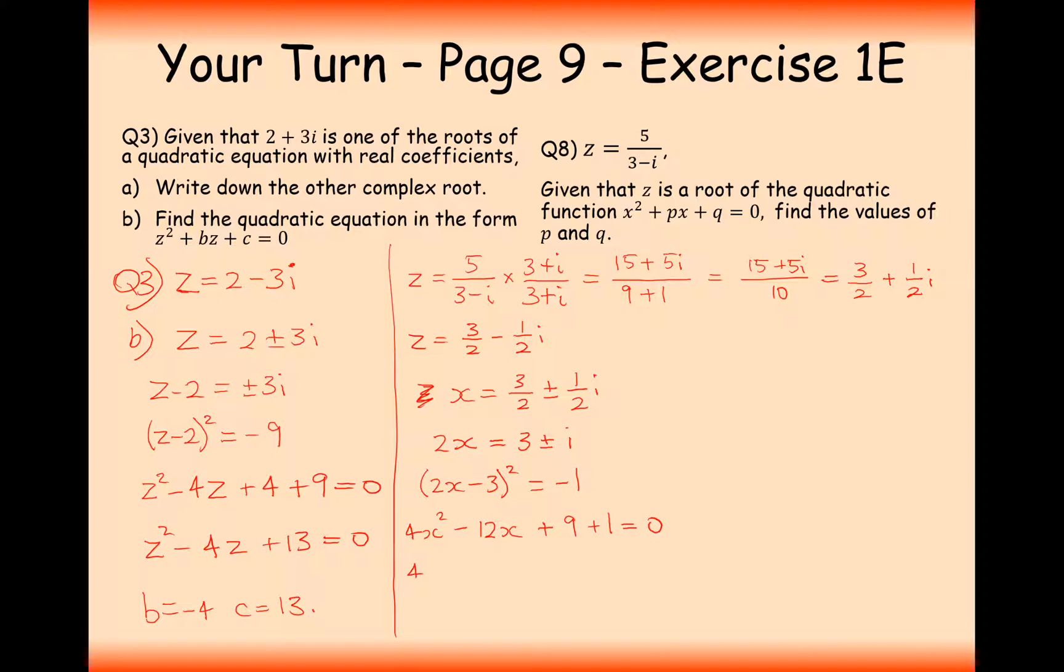So it's 4x squared minus, that will give me minus 6x times 2 will give me minus 12x plus the 9 plus the other one coming over from the other side. So it's going to be 4x squared minus 12x plus 10 equals 0. They're all factors, so we need to make it x squared. Let's divide through by 4. So it's going to be x squared minus 3x plus 2.5 equals 0. That's the answer to question 8 of exercise 1E.